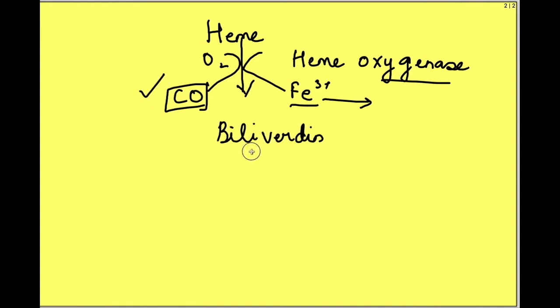This biliverdin is further reduced to bilirubin. Bilirubin is released into the circulation. Now in intravascular hemolysis, hemoglobin is not captured by macrophages and is directly released into the circulation.